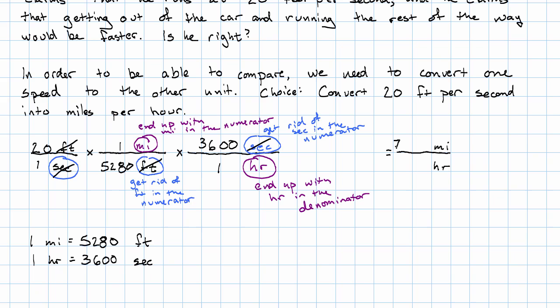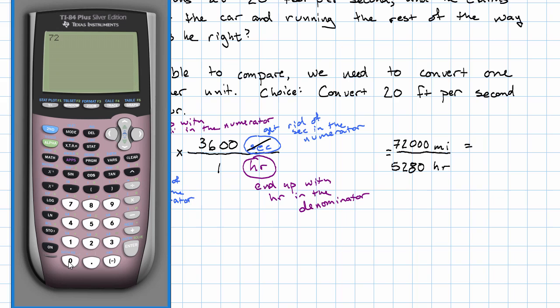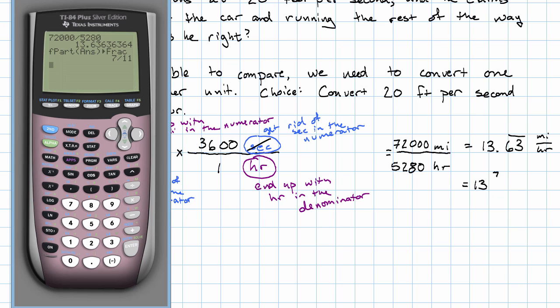Let's do the arithmetic now. 20 times 3,600 is 72,000. A bunch of ones times 5,280 is 5,280. And then let's put that into the calculator, 72,000 divided by 5,280 is 13.63 repeating miles per hour. I can leave that as a decimal. I could make that a fraction if I wanted. 13 and math fraction part answer. 13 and 7 elevenths miles per hour. That's also fine.